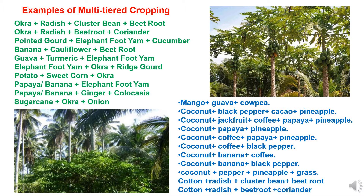Other crops like mango plus guava plus cowpea. Coconut is grown with black pepper plus cocoa plus pineapple. Coconut with jackfruit and coffee, papaya and pineapple. Coconut plus coffee plus papaya and pineapple is one good combination. Coconut-based multi-tiered systems are also grown with coffee and black pepper, banana and coffee, banana and black pepper, pepper and pineapple with grasses. Cotton is grown with radish plus cluster beans and beetroot, or radish, beetroot and coriander. These are various combinations along with coconut, cotton, banana, papaya and sugarcane.